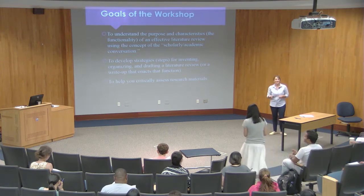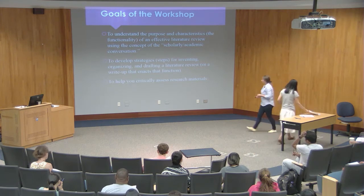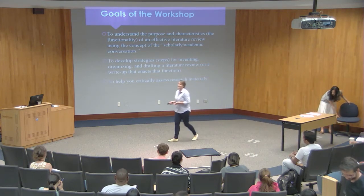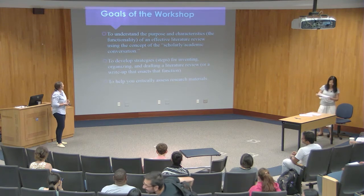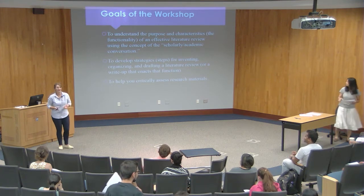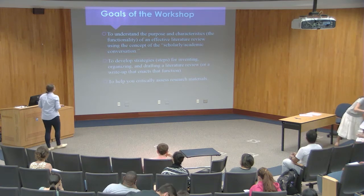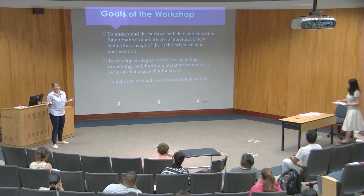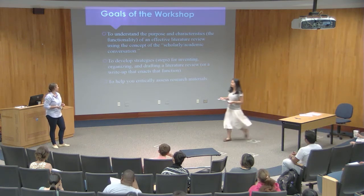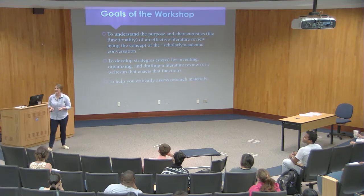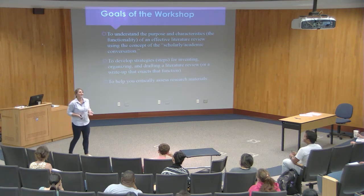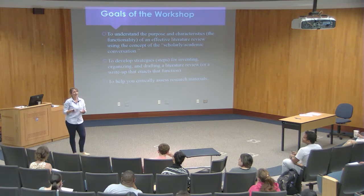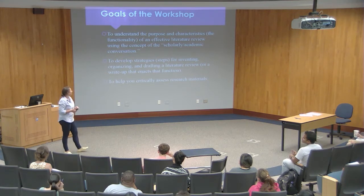So this workshop has some very specific goals. We want to understand the purposes and characteristics of effective literature review writing strategies — what does an effective literature review look like? How do we enter a scholarly or academic conversation effectively? Then we're going to talk about strategies for inventing, organizing, and revising your literature reviews, and talk a little bit about critically assessing your sources, because you could read and read and probably never be done. Hopefully we'll cover all of that today.